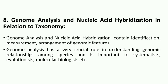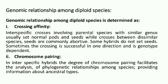Lastly, genome analysis and nucleic acid hybridization in relation to taxonomy — simply the taxonomy in relation with the molecular structure, means identification and differentiation of the plant based on molecular structure, by analyzing the genome, DNA or RNA. The genome analysis and nucleic acid hybridization contain three main steps: identification, measurement, and arrangement of genomic features. First we should identify, then we should measure, then we should arrange them as per the respective orders. The genome analysis has a very crucial role in understanding genomic relationship among species and is important to systematics, evolutionists, molecular biologists, etc. The genomic relationship among polyploid species is determined by two factors: crossing affinity and chromosome pairing.